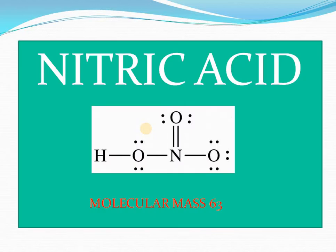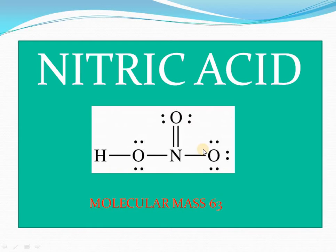The nitric acid formula, as you know, is HNO3, and the Lewis dot structure is shown here. If you see the nitrogen, nitrogen is having 5 valence electrons. Here 4 bonds are formed. So one of the nitrogen-oxygen single bonds — this is donating 2 electrons from the nitrogen. That is, these 2 electrons are given to the oxygen, forming the coordinate bond, as you have studied in chemical bonding.